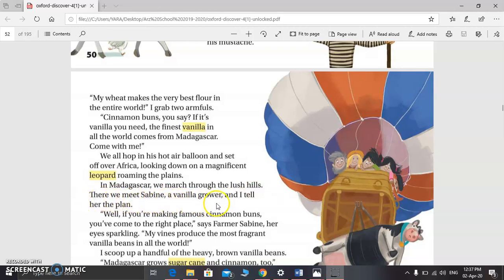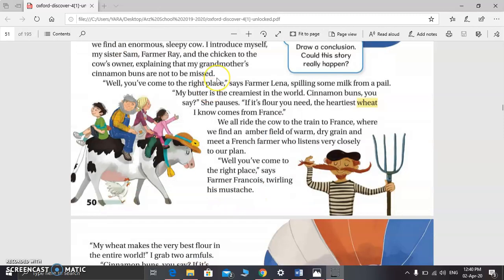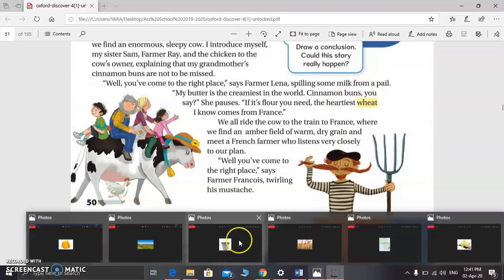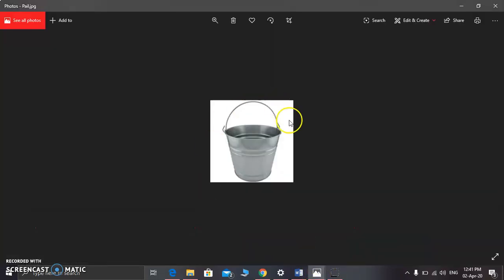All right, we finished reading the second part of this text. Now let's start the explanation. The children and the farmer met Farmer Lena. She told them, well, you've come to the right place, says Farmer Lena, spilling some milk from a pail. Here is a pail—it's a bucket.